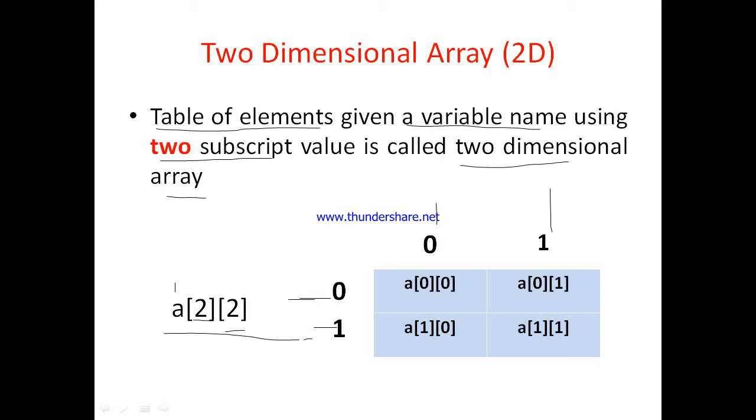Now each memory location is represented using combination of rows and columns. Here it is a combination of zero row, zero column, so its name is a[0][0]. It is a combination of zero row and one column, so name is a[0][1]. It is a combination of first row and zero column, so name is a[1][0]. It is a combination of first row, first column, so name is a[1][1].